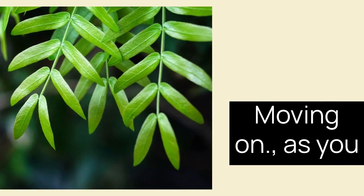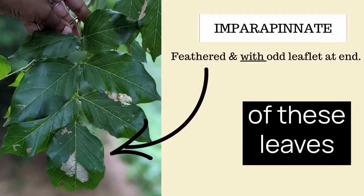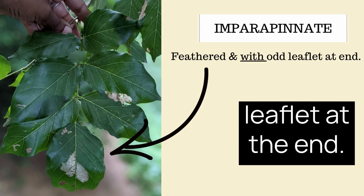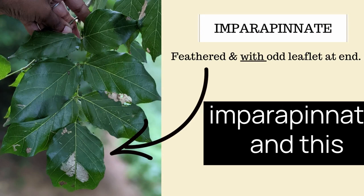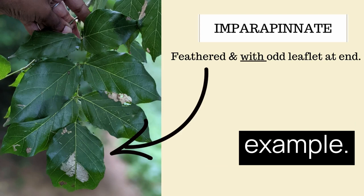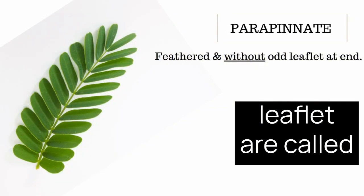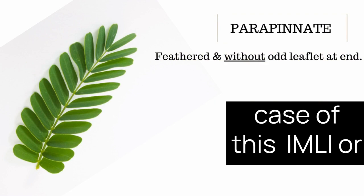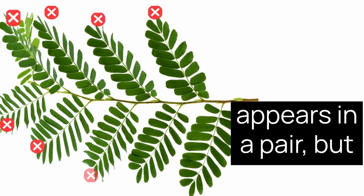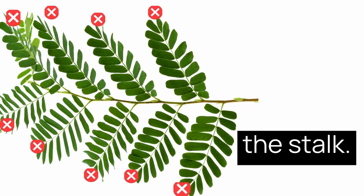As you notice a compound leaf that is feathered, you may observe a finer detail: that some of these leaves have a terminal leaflet at the end. These are called imparapinnate, and this pongam or karanj leaf here is an example. Those that do not have a terminal leaflet are called parapinnate, as in the case of this imli or tamarind, where each leaflet appears in a pair but there is no terminal leaflet at the end of the stalk.